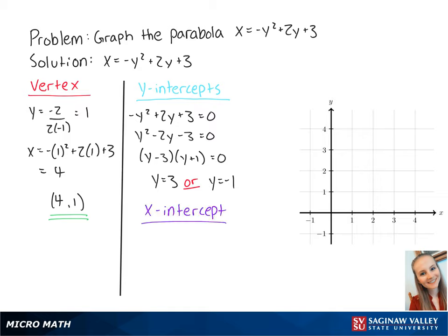Next, we want to find the x-intercept, which is when y is equal to 0. So we set up the equation x equals negative 0 squared plus 2 times 0 plus 3, which is equal to 3. Now that we have the intercepts: y equals 3, y equals negative 1, and x equals 3.